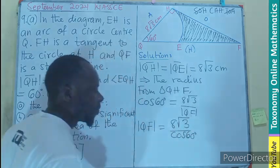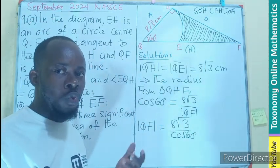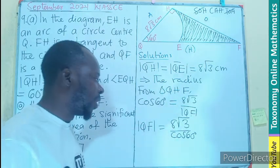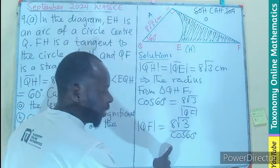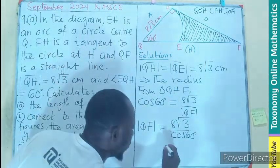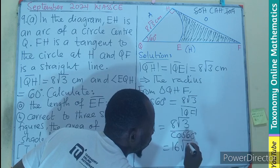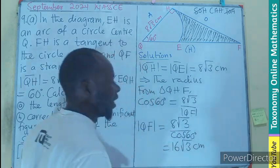If we cross multiply, the length of QF equals 8√3 divided by cos 60 degrees. Cos 60 is half, or one over two, so one over two will multiply this. You can put all in the calculator and you get your answer as 2 times 8 is 16√3 centimeters.